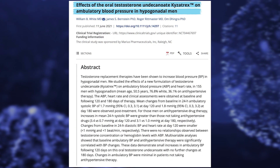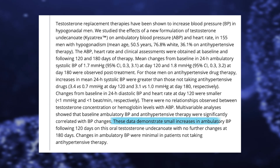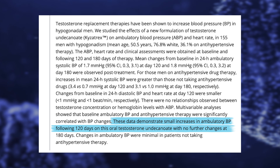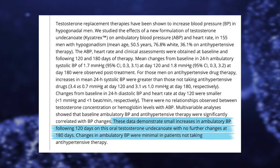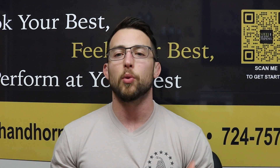Also notably, there were no major adverse events, but there was an increase in ambulatory blood pressure. A sub-study titled 'Effects of the Oral Testosterone Undecanoate Kyzatrex on Ambulatory Blood Pressure in Hypogonadal Men' showed small increases in ambulatory blood pressure following 120 days on this oral testosterone undecanoate, with no further changes at 180 days. Changes were minimal in patients not taking antihypertensive medications. To recap: Kyzatrex works — 96.1% of the time people reached therapeutic testosterone levels, free testosterone also increased, though it is dosed twice daily.